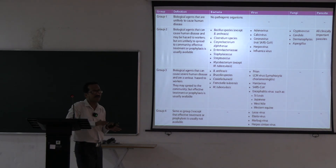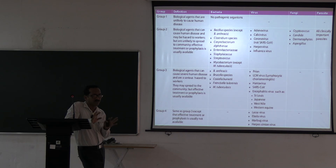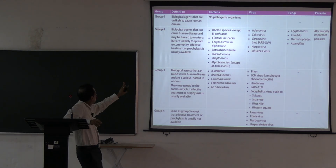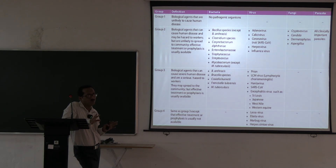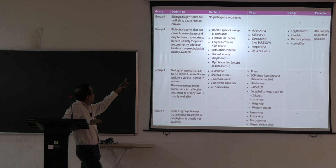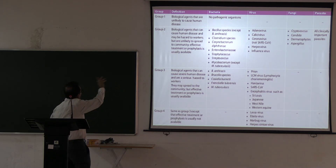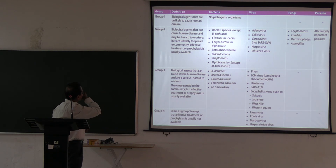Separately, there is a laboratory biosafety classification of organisms based on danger to healthcare workers: Group 1 (no pathogenic organisms), Group 2 (treatable organisms — Bacillus species other than anthracis, Clostridium, Corynebacterium, Enterobacteriaceae, Staphylococcus, Streptococcus), and Group 3 (organisms that are difficult to treat, requiring a biosafety cabinet type 2).